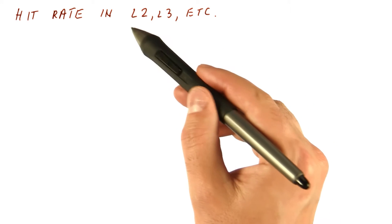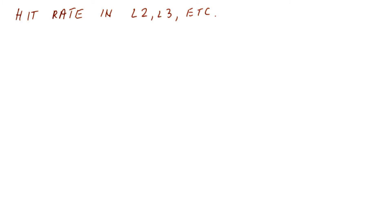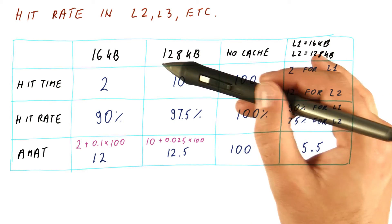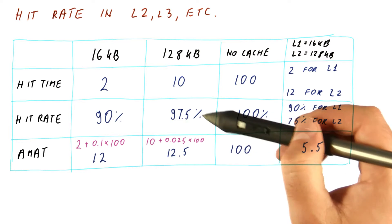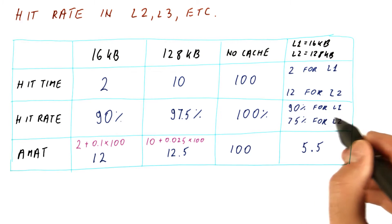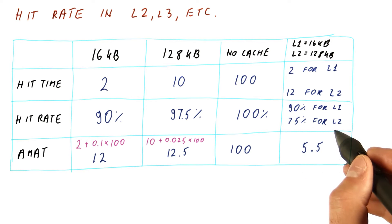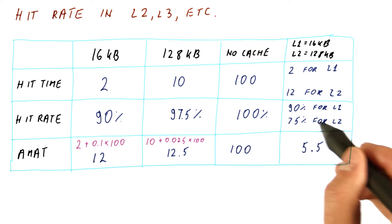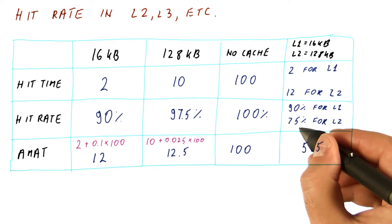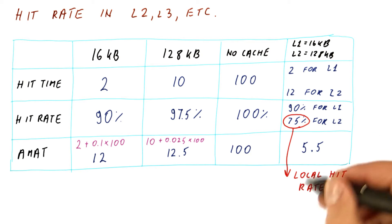We have observed that when the cache used as the L2 cache is used alone, it has a higher hit rate. Looking back at our example, the 128 kilobyte cache, when used alone, would have a relatively high hit rate. But when we use it after the level one cache has already been accessed, it only gets a 75% hit rate. So it looks like the L2 cache has a lower hit rate than the L1 cache, which can be misleading. This particular type of hit rate we call the local hit rate for this cache.